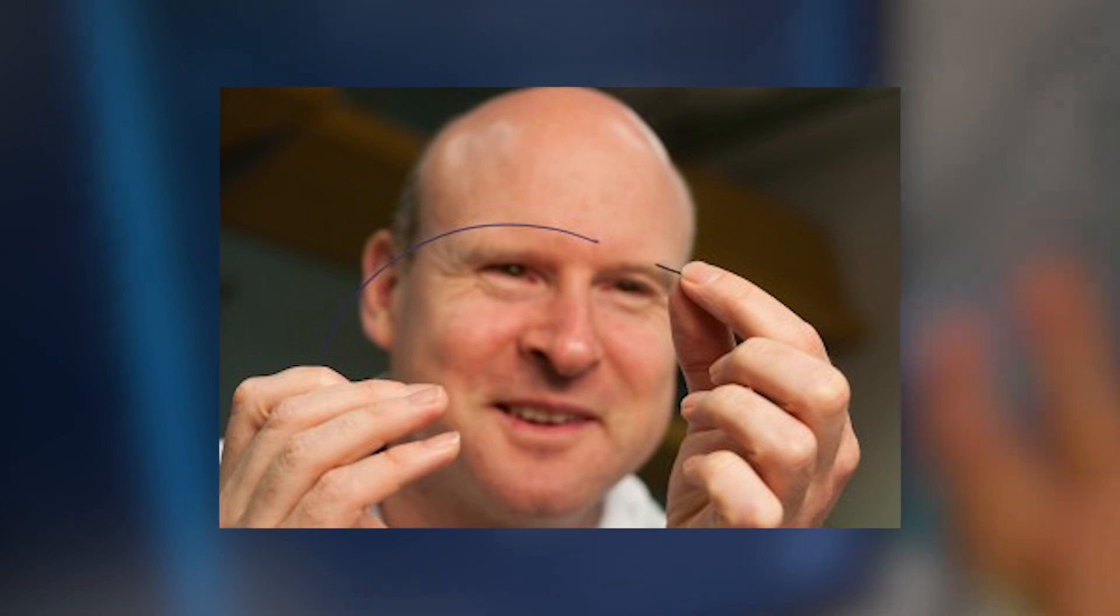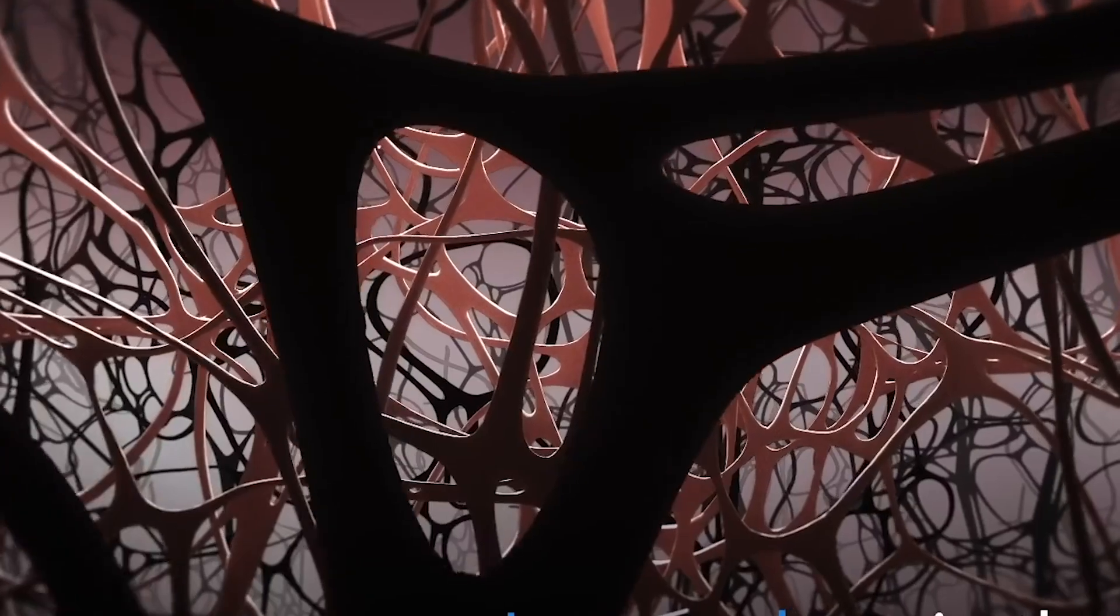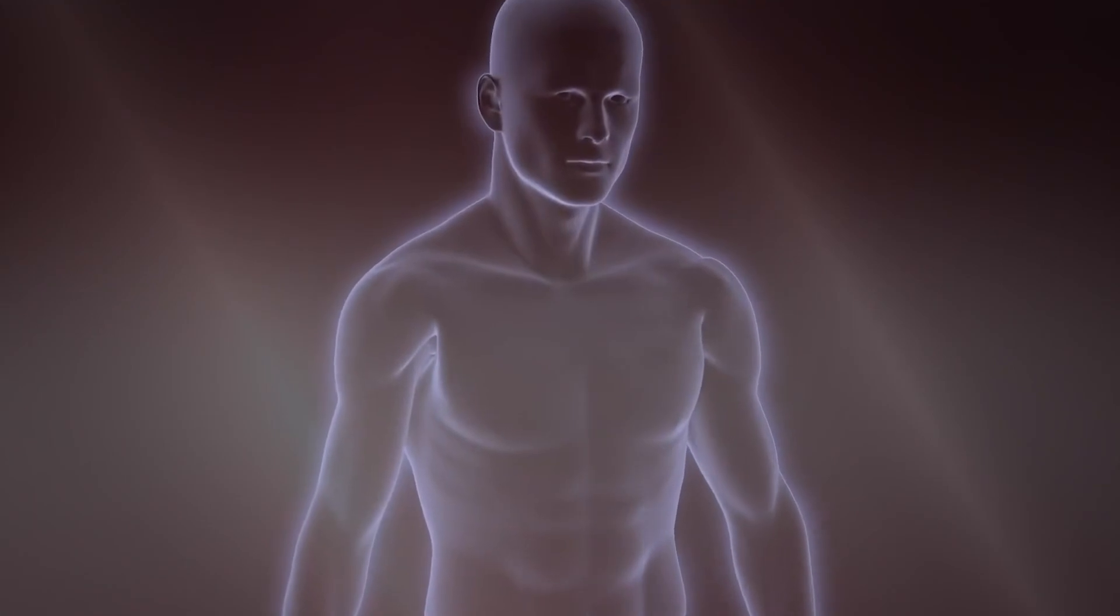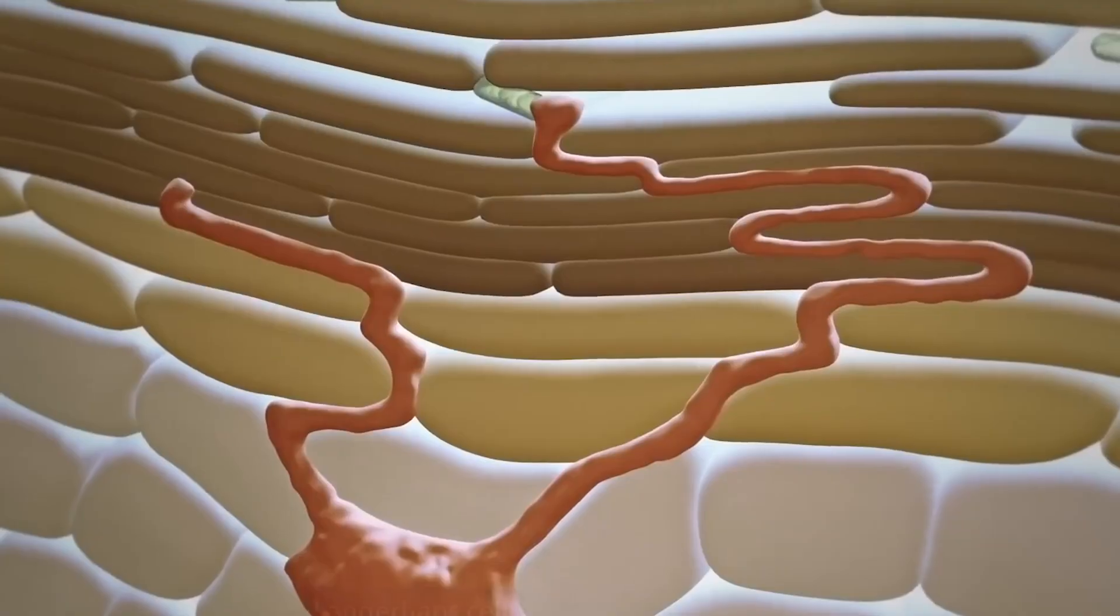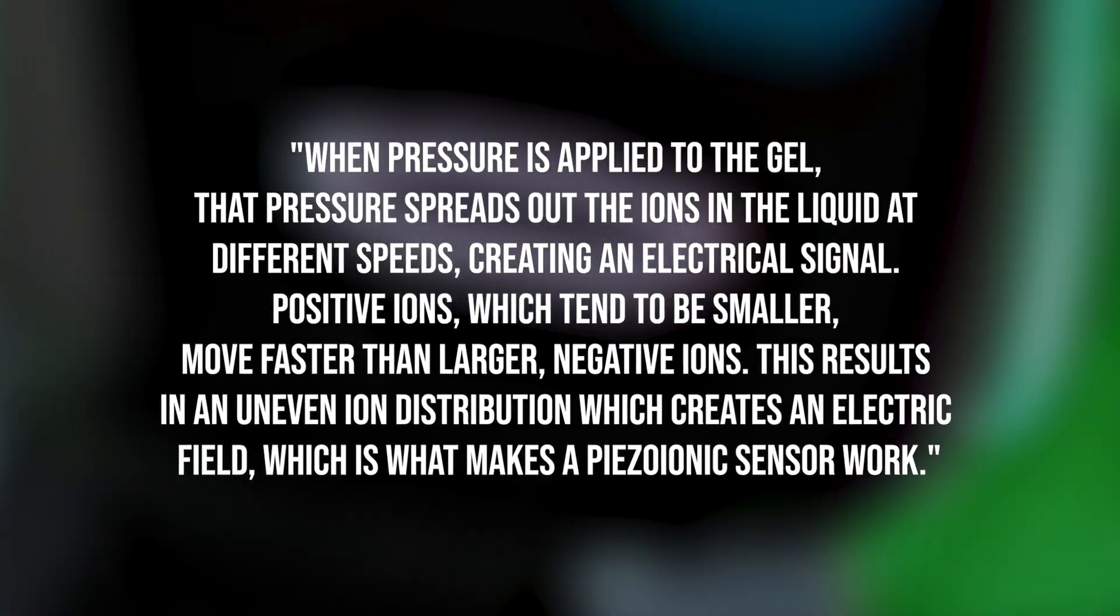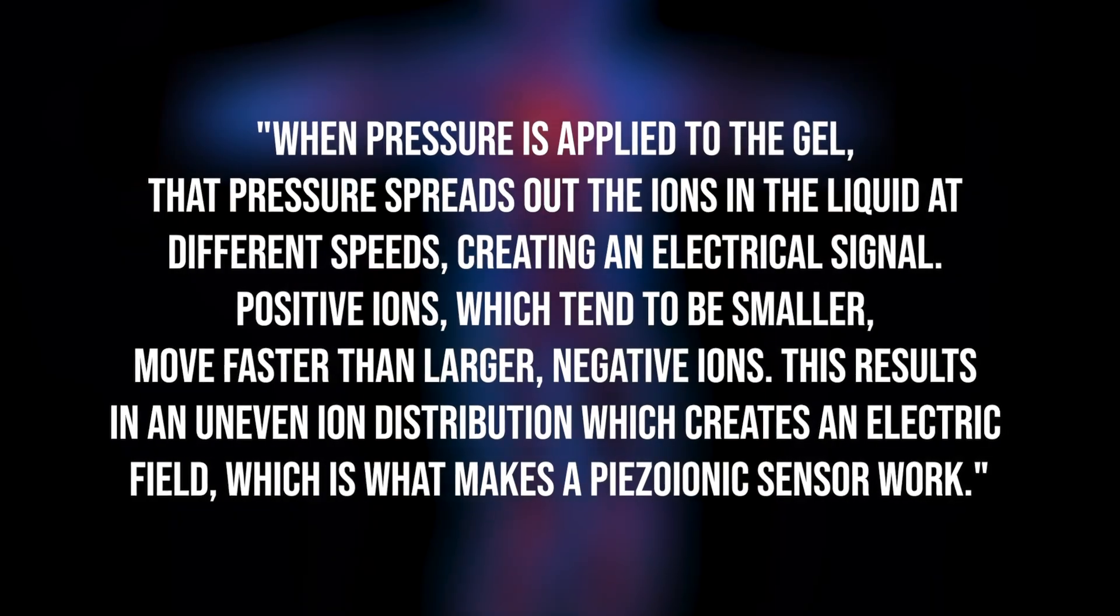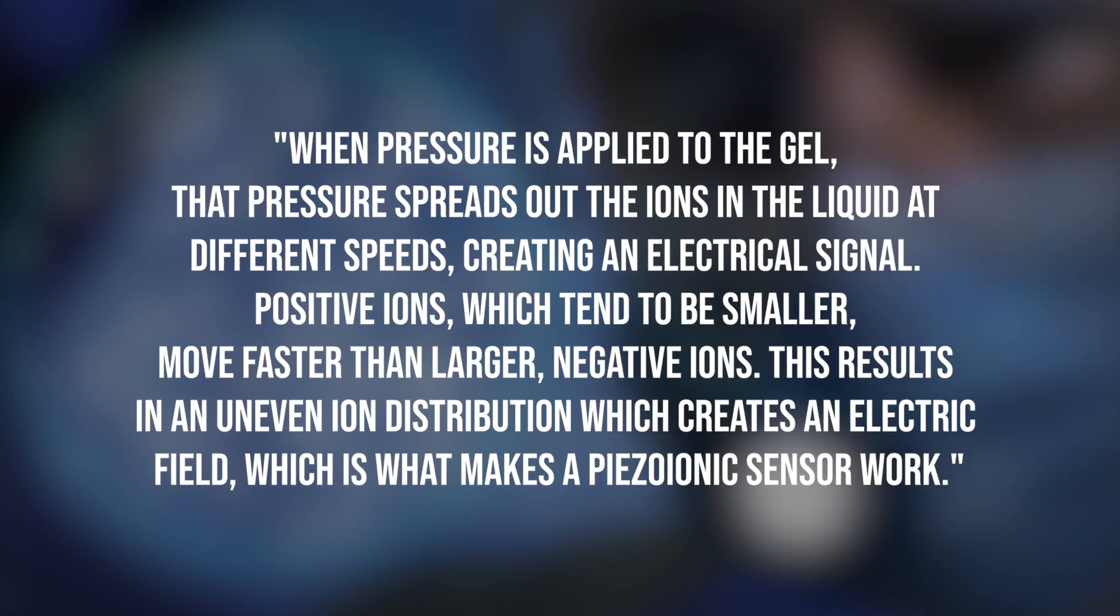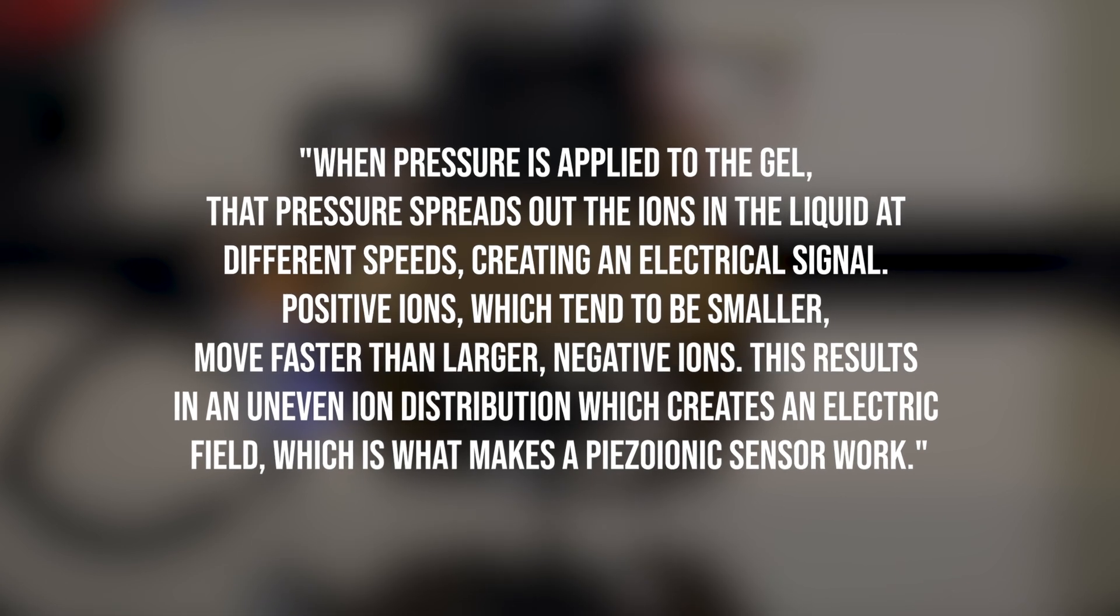Working under the supervision of UBC researcher Dr. John Madden, Dobashi devised hydrogel sensors containing salts with positive and negative ions of different sizes. He and collaborators in UBC's physics and chemistry departments applied magnetic fields to track precisely how the ions moved when pressure was applied to the sensor. When pressure is applied to the gel, that pressure spreads out the ions in the liquid at different speeds, creating an electrical signal. Positive ions, which tend to be smaller, move faster than larger negative ions. This results in an uneven ion distribution which creates an electric field, which is what makes a piezoionic sensor work.